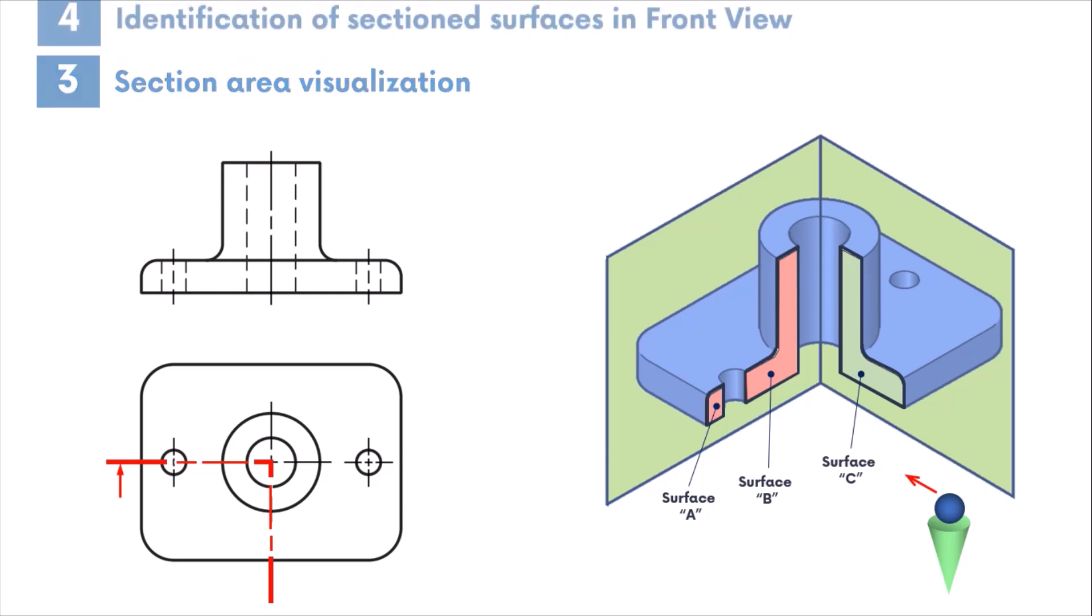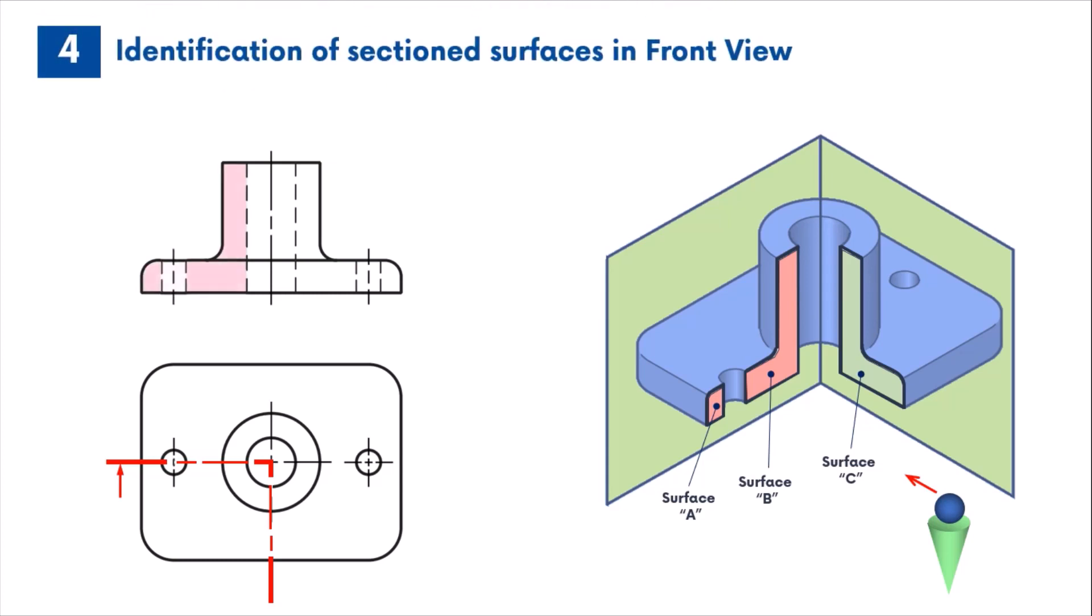The next step involves the identification of the sectioned area of the front view. The surfaces A and B can be easily identified in the left half portion of the front view. These section surfaces are surrounded by both hidden lines and object lines.